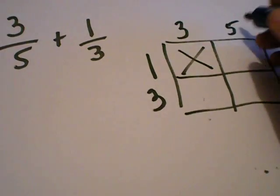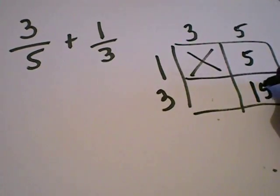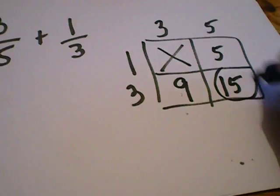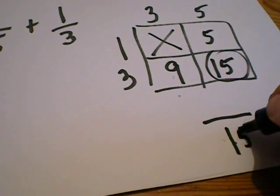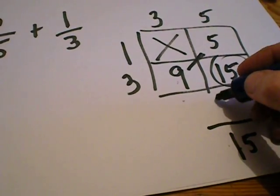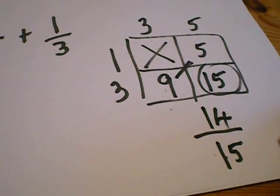Because one times five is five in this box here. We've got five times three which is fifteen. Three times three is nine. Now whatever's in this box here goes at the bottom of the fraction, and then these two here we add them up. So nine and five is fourteen. Fourteen over fifteen is your answer.